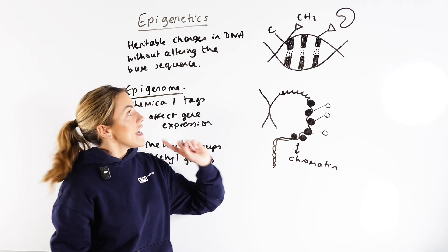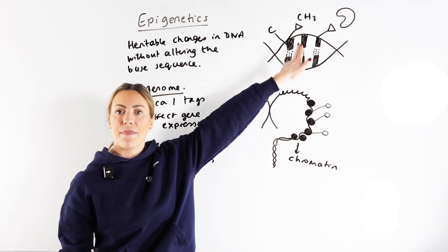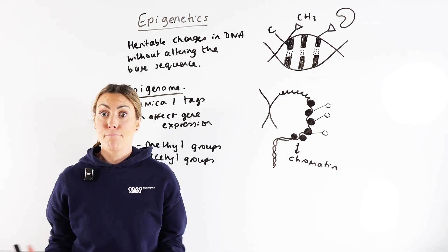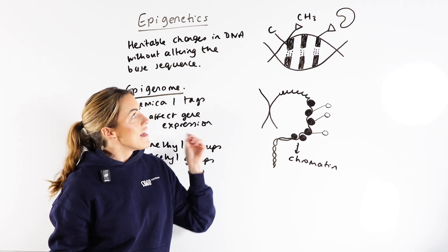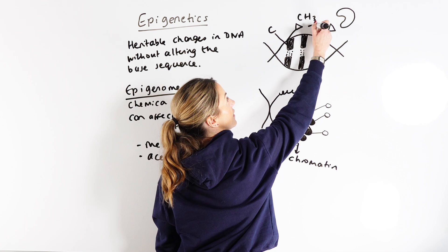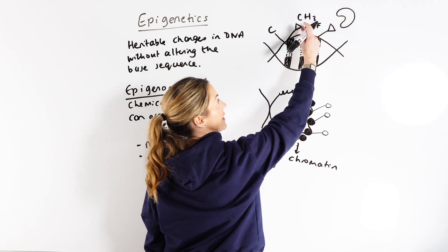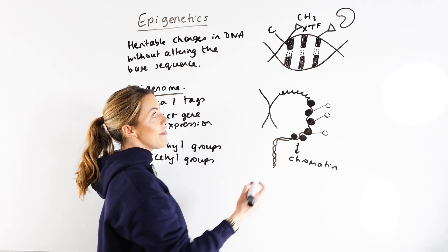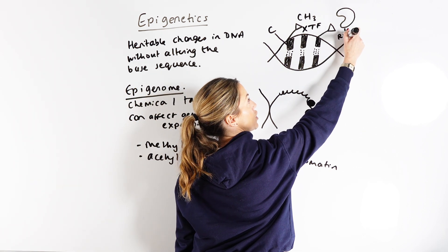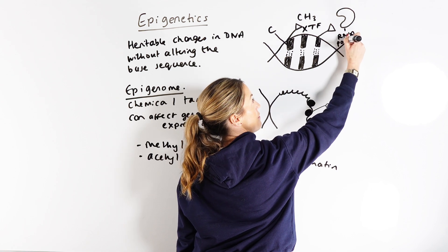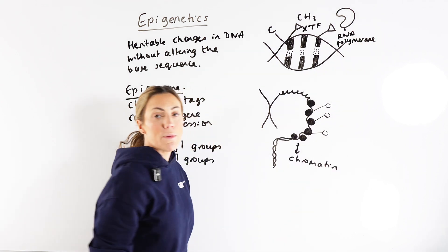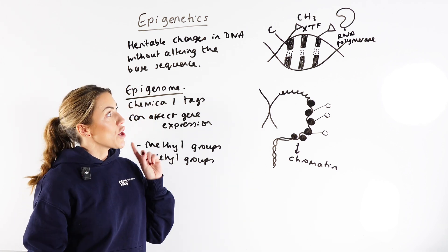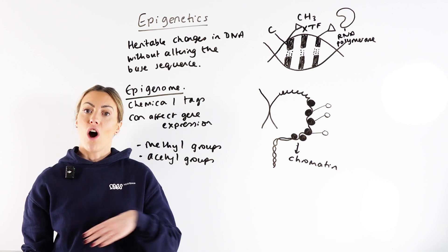So if we have increased methylation, or we increase the number of methyl groups on the promoter region of a gene, then the transcription factor cannot bind to the promoter region. And that means that RNA polymerase, which is responsible for transcription, cannot initiate transcription. So gene expression here would be switched off.